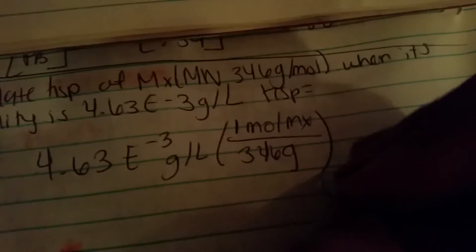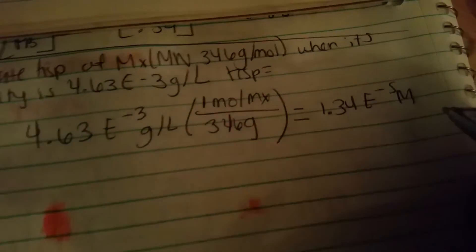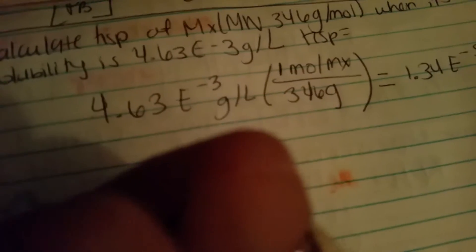So then this will give you 1.34 times 10 to the negative 5. So what you do next is just KSP, you have your KSP equals 1.34 times 10 to the negative 5.